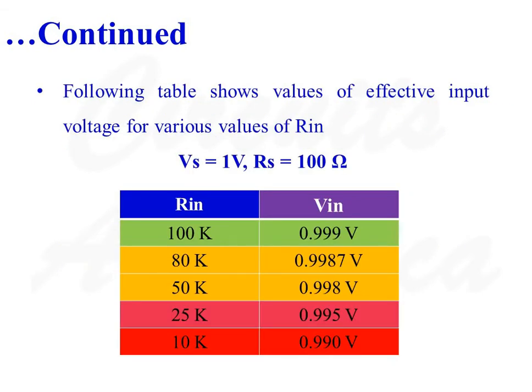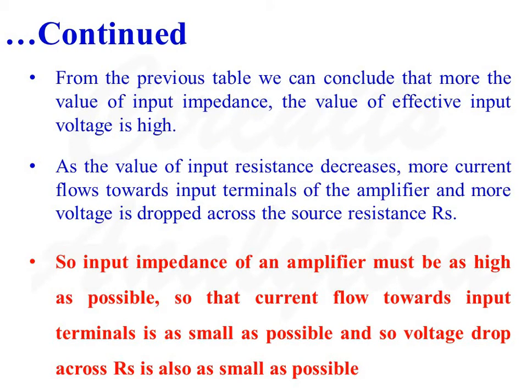The following table shows values of effective input voltage for various values of input resistance RIN, when input voltage VS is equal to 1V and source resistance RS is equal to 100 ohms. When RIN is equal to 80K, VIN is equal to 0.9987, and so on. When RIN is equal to 10K, the effective value of input voltage is only 0.99V. From this table we can conclude that the higher the value of input impedance, the higher the effective input voltage.